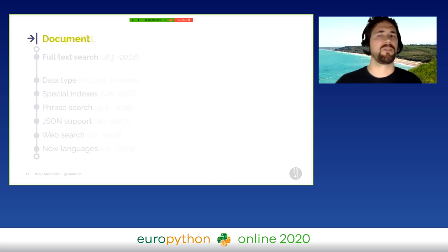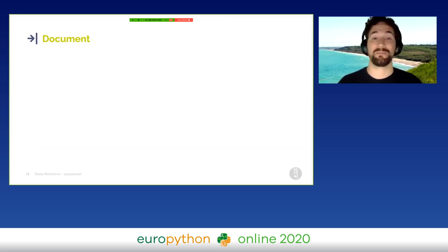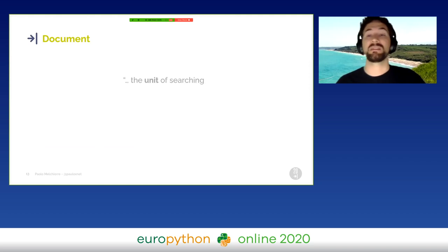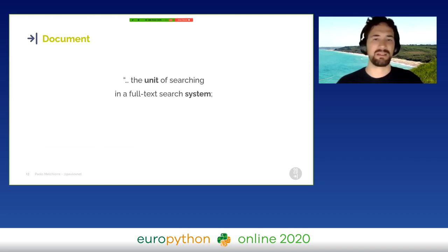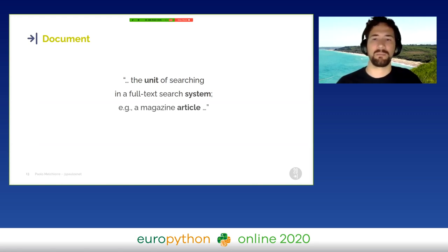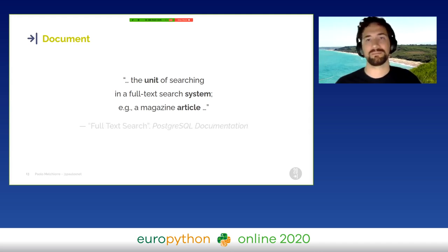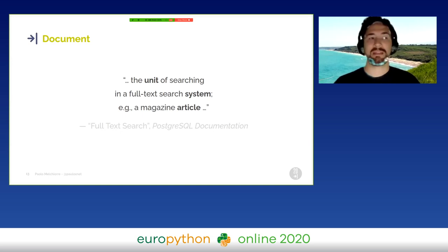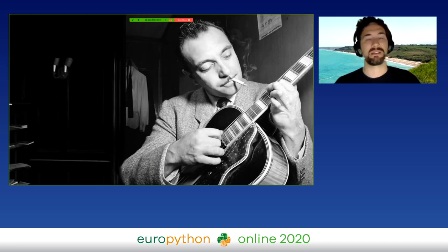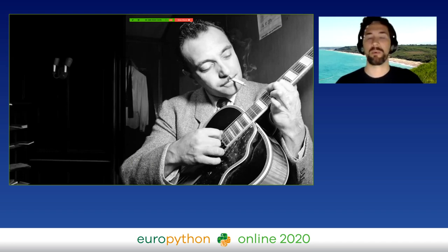The main concept of full-text search in Postgres is the document. A document is the unit of searching in a full-text system — for example, a magazine article, or the union of all its parts: the title, the abstract, and the body text. But implementing a web search function directly on the database can be a low-level task. To do this, we can use a web framework — maybe one of the best.